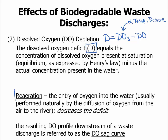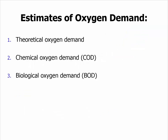Reaeration will be defined as the entry of oxygen from the atmosphere. Reaeration decreases the deficit or increases the DO. Within environmental engineering, there are three ways to discuss the oxygen demand. The first is the theoretical oxygen demand, which can be calculated based on stoichiometry. The second is chemical oxygen demand, and the third is biological oxygen demand. We will discuss each of these in brief.